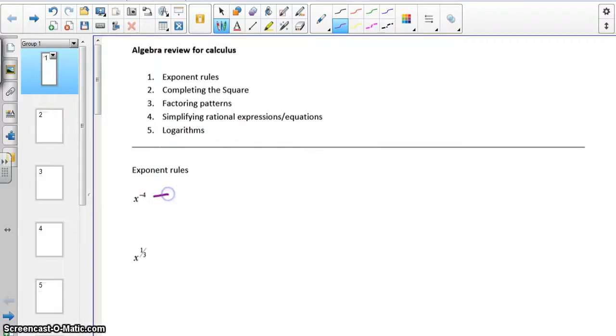So, exponent rules. Two things that come up a lot in calculus are negative exponents. In the example that I have here, x to the negative fourth is one over x to the fourth, and x to the one third is the cube root of x to the first.